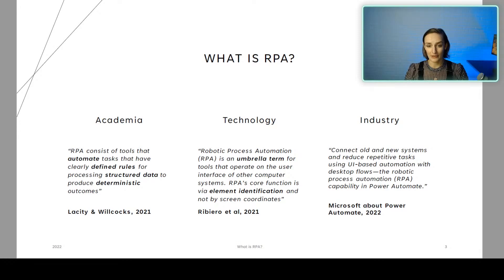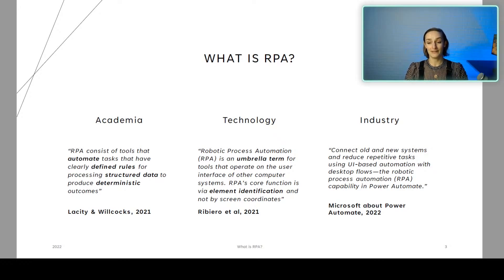RPA is an umbrella term — it's a tool that automates element identification, and not by screen coordinates. And if you look at Microsoft, one of the large suppliers of RPA tools, what they say is that it's a tool that can connect all new systems and reduce repetitive tasks using UI-based automation. So I think we're quite well covered with these three definitions.